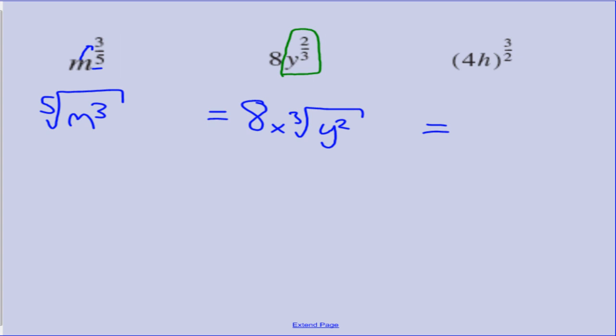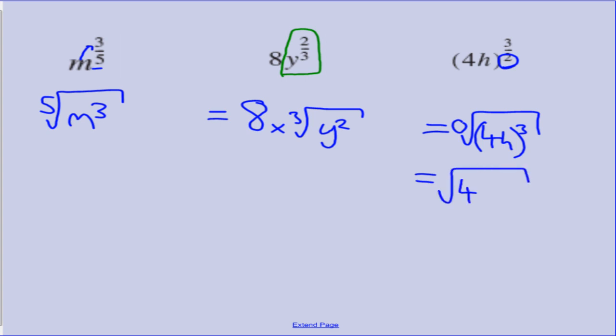This next example does have brackets, so both the 4 and the H have the power of 3 halves — they both end up under the square root sign and both need to be cubed. Because the denominator is 2, the power of the square root sign is 2 so we don't need to write it. Expanding the brackets gives us 4 cubed and H cubed under the square root: the square root of 4×4×4×H cubed, which is the square root of 64H cubed.